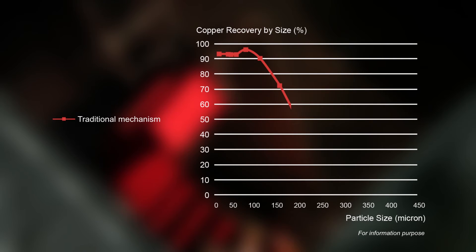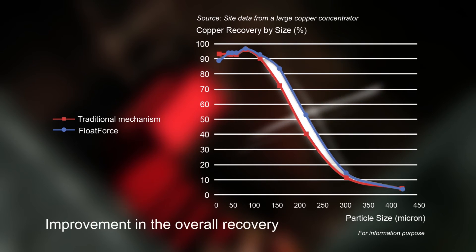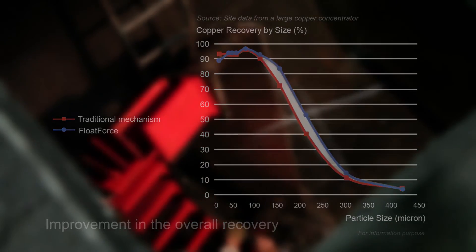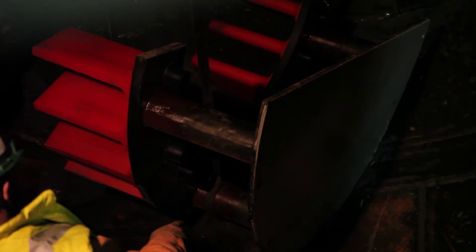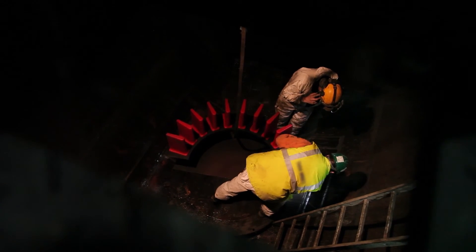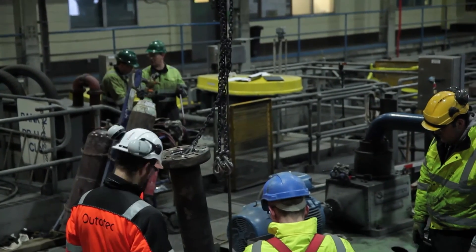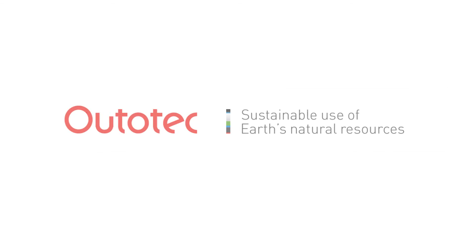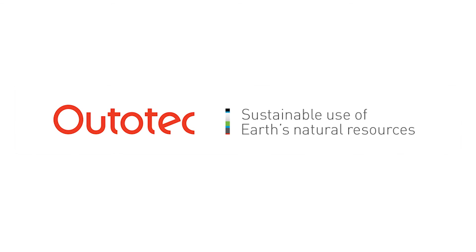Independent test results and customer testimonies show that it is possible to improve a plant's metallurgical performance by upgrading to Outotec's Float Force mixing mechanism. Better pumping and enhanced air dispersion improve the conditions for flotation, which can result in improved recovery across all size fractions. The monetary value of this improvement is in the millions of dollars, according to some customer testimonies.